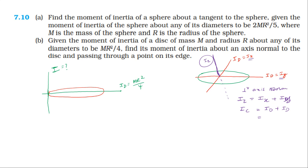The moment of inertia about a diameter is mr²/4. Since Ix = Iy = mr²/4, by the perpendicular axis theorem: Iz = Ix + Iy = mr²/4 + mr²/4 = mr²/2. So the moment of inertia about the z-axis, passing through the center of mass and perpendicular to the plane of the disk, is mr²/2.